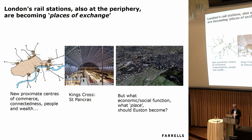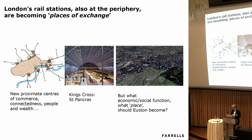Moving on to the planned terminal of HS2 in the centre of London: Euston. The image on the left is talking about the fact that our stations came into the periphery of London by decree. They're linked now by the Circle line and they're becoming what I call places of exchange. Our stations are becoming town centres in their own right, as we can see at King's Cross, where more and more people are going there not to travel. The final thing for me is: what place should Euston become? What do we want Euston to be? We should be thinking about that before we start planning transport.